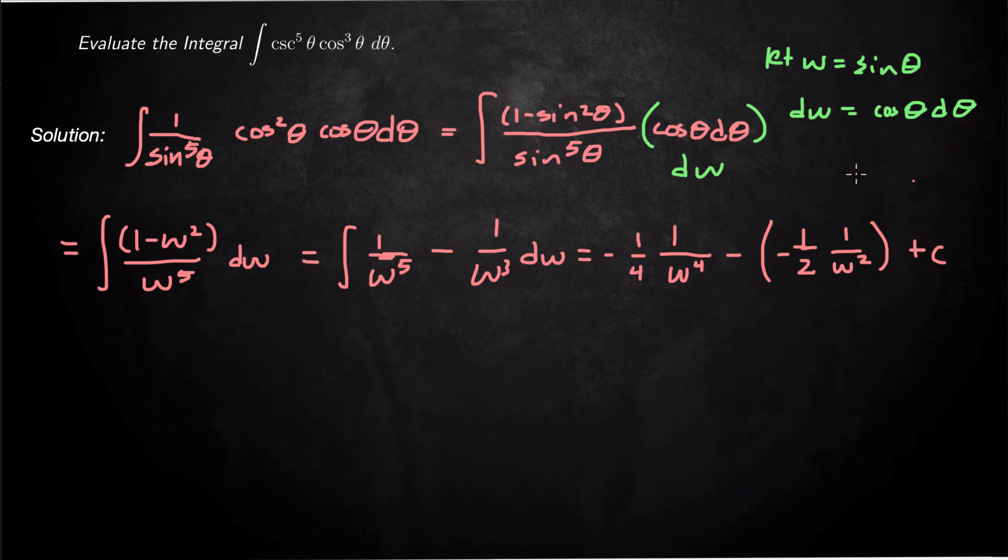And so I can go back and say, okay, w was sine theta, so plug that in. We get negative 1 over 4,